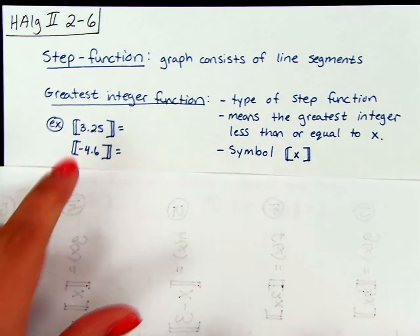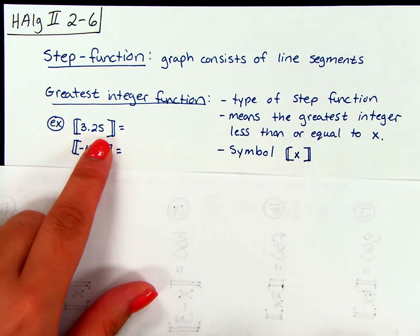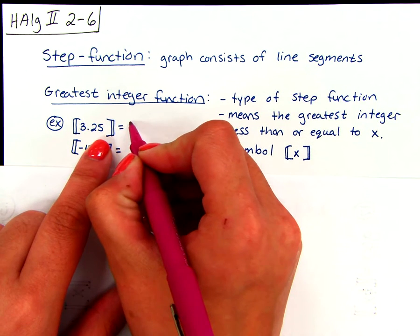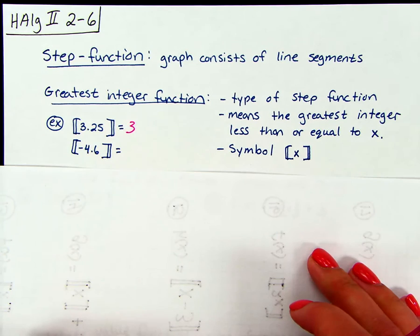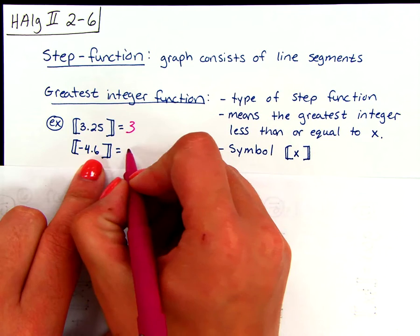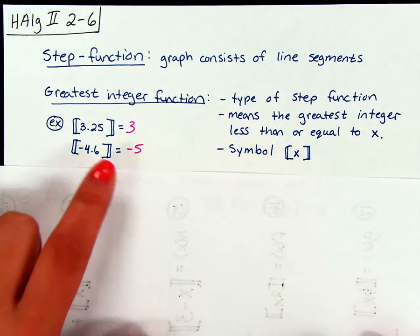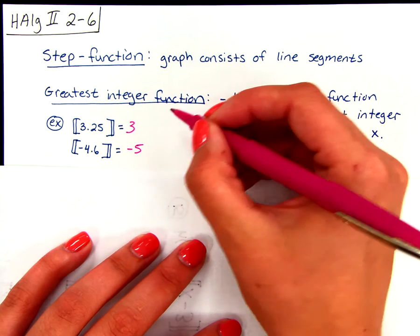So if we're always going to round down, 3.25 would be simplified to 3. And then on the negative, so again remember we're rounding to the left, this would simplify to be negative 5. And again, no matter what, we're always rounding down.